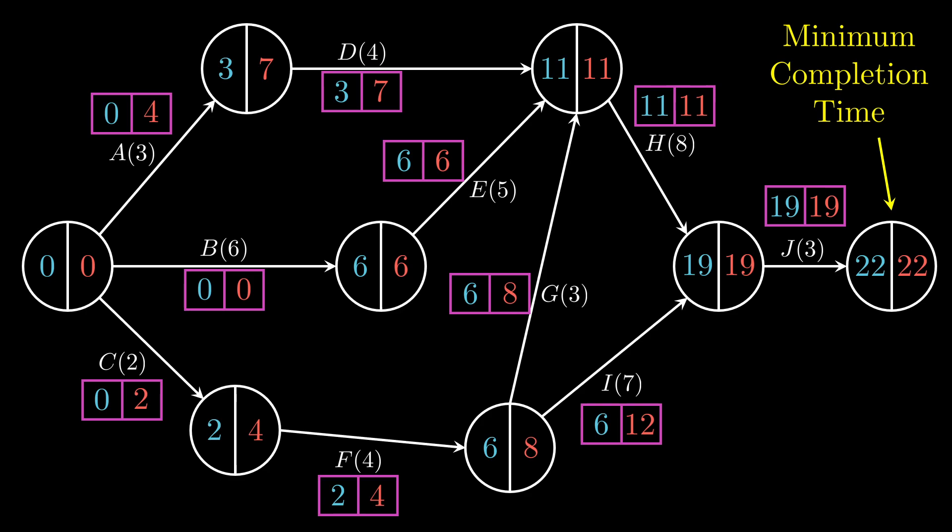Now if we look at each individual activity, let's just say we look at D first. You notice that he could start on day 3, but he could afford to wait until day 7 without holding anyone up, without delaying the entire project. So he could afford to wait for 4 days, and that's what we call the float time for D's activity.